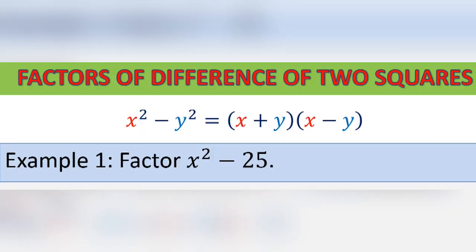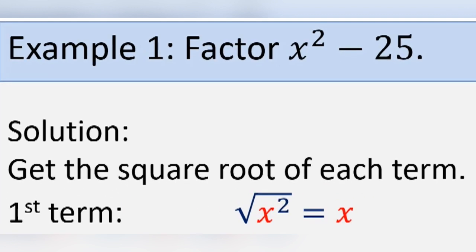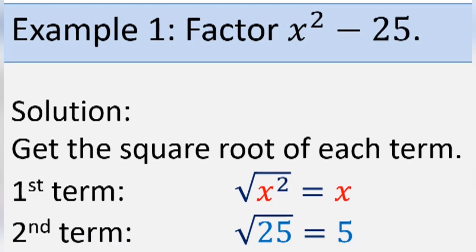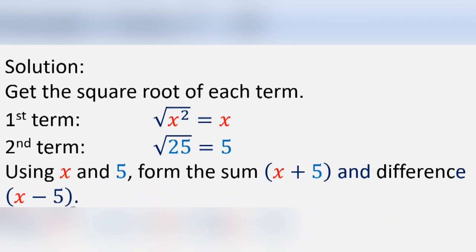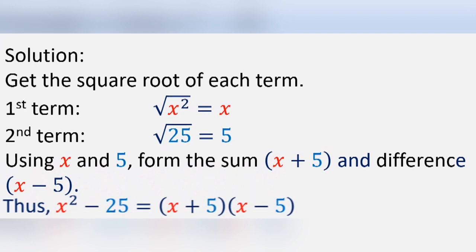Example number one: factor x squared minus 25. First, get the square root of each term. The square root of x squared is x, and the square root of 25 is 5. Step number two, using x and 5, form the sum and difference. Thus, x squared minus 25 is equal to the product of x plus 5 and x minus 5.